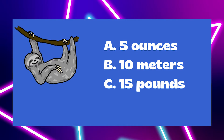The sloth — let's see. We've got three choices: five ounces, 10 meters, or 15 pounds. Do you see one we could eliminate? Hopefully you noticed that B, 10 meters, is not a unit for weight — that's a unit for length. So we're going to get rid of that one. And then between five ounces and 15 pounds, what would be reasonable for a sloth? 15 pounds.